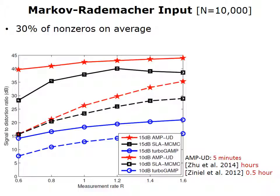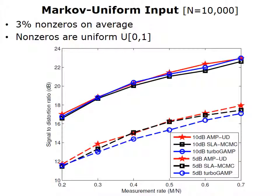Let's look at numerical results for non-IID inputs — we revisit the Markov Rademacher source from the demo. The horizontal axis shows the measurement rate and the vertical axis is reconstruction quality. The three colors correspond to three algorithms, and for each color there are two lines corresponding to different signal-to-noise ratios. Blue is TurboGAMP, a Bayesian approach by Phil Schniter's group at Ohio State, which requires statistical information about the input. Black is the SLAM algorithm, another universal algorithm by our group. Red is AMP-UD. The red appears highest, meaning that AMP-UD reconstructs best among the three algorithms. Moreover, AMP-UD is fastest — it runs in roughly five minutes, while SLAM takes perhaps two hours and TurboGAMP half an hour.